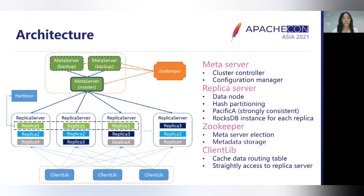Here is the architecture of PEXUS. PEXUS uses a classical centralized architecture. MetaServer is the cluster controller — it manages cluster configuration and cluster metadata. Replica servers are data nodes; user data will be hash-partitioned into replicas. Every replica stores data in a RocksDB instance, and each replica has one primary and two secondaries. PEXUS uses Pacifica-A to guarantee strong consistency across replicas, and Zookeeper is used for MetaServer election and persistently storing cluster metadata. The PEXUS client caches the data routing table when first connecting to the cluster, and accesses replica servers directly in normal cases.